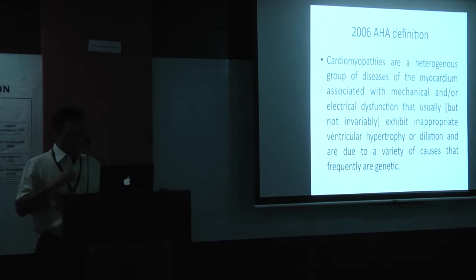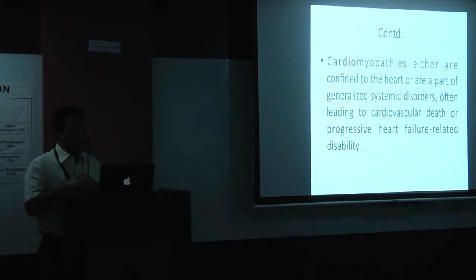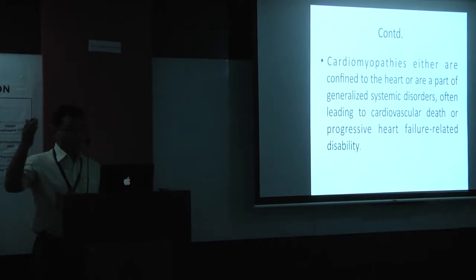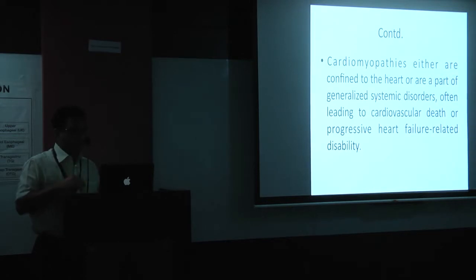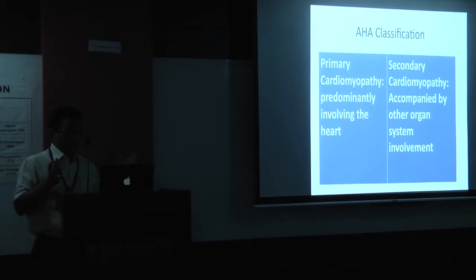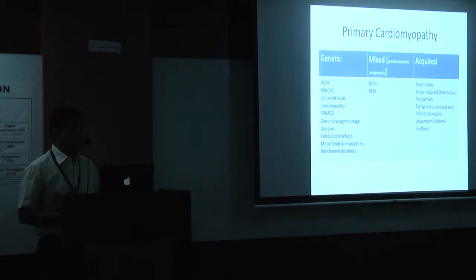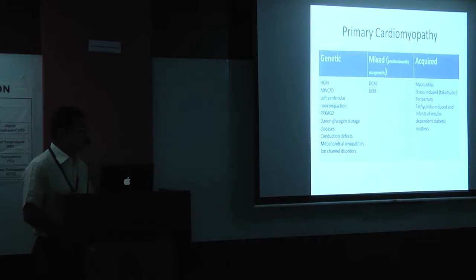The AHA said cardiomyopathies either are confined to the heart or are part of generalized systemic disorders, often leading to cardiovascular death or progressive heart failure. They excluded ischemic heart disease and valvular heart disease. They classified cardiomyopathies as primary or secondary — primary involving the heart, secondary involving other organ systems. Under primary: genetic, mixed, and non-genetic. Genetic included hypertrophic cardiomyopathy, arrhythmogenic, and non-compaction. Mixed included dilated and restrictive. Acquired included broken heart syndrome and others.